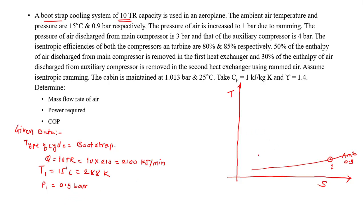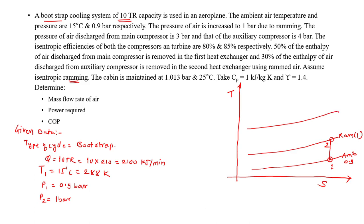The pressure of air is increased to 1 bar due to ramming, so I'll have one more pressure line for the ramming pressure at 1 bar. The process 1 to 2 is the ramming process, and they clearly mention to assume isentropic ramming, so there is no loss. Point 2 is at P2 equals 1 bar. Then the next pressure line is the main compressor pressure at 3 bar, and process 2 to 3 is isentropic, shown as a vertical line. So P3 equals 3 bar.